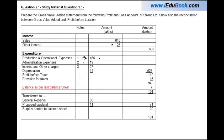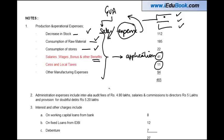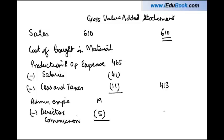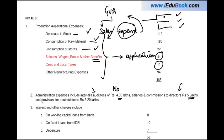Administration expenses are 19. Admin expenses include audit fees — audit fees are not an employee expense because an auditor is not an employee of the company. Salaries and commission to director of ₹5 lakhs is an application, so we take admin expenses of 19 minus director commission of 5, giving 14. Audit fees are not deducted as they are a third-party expense, and provision for doubtful debts is normal business and will not be considered.